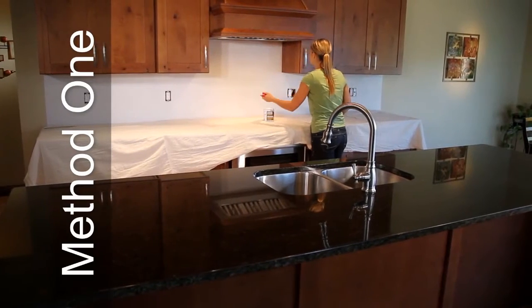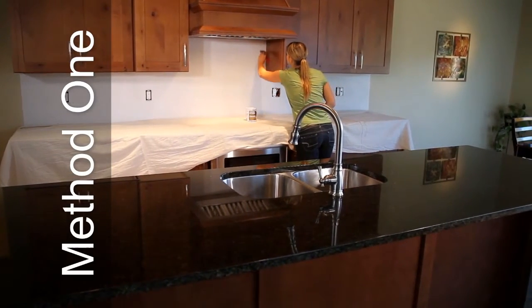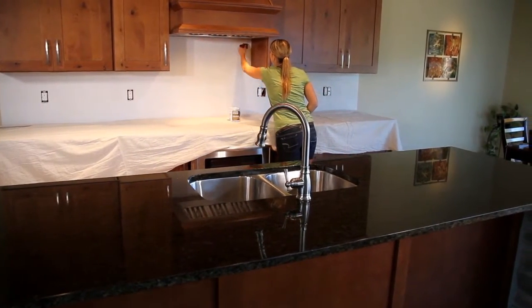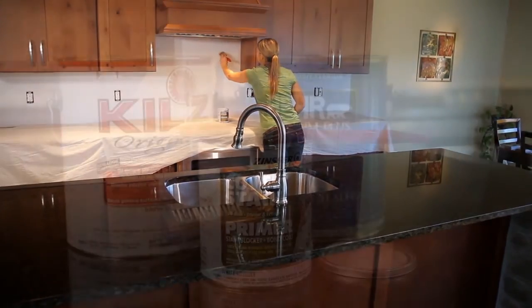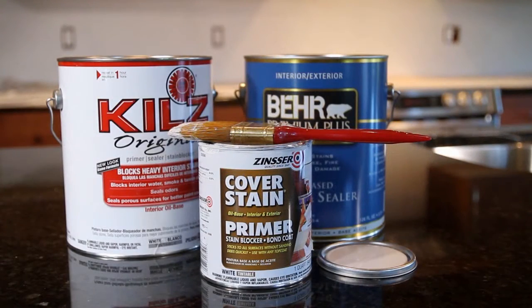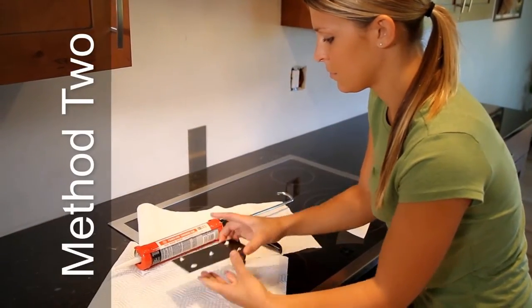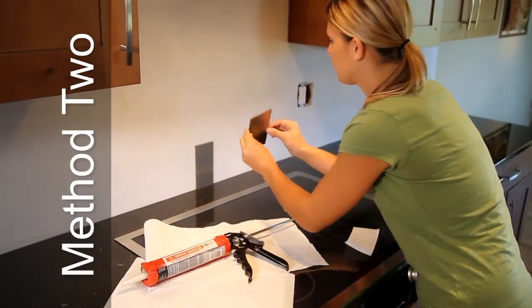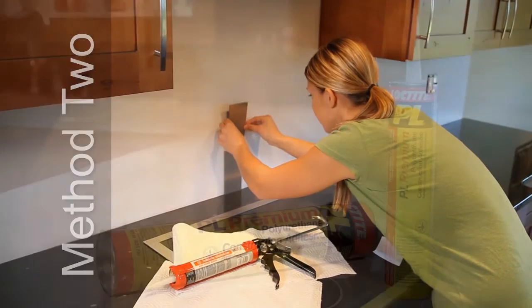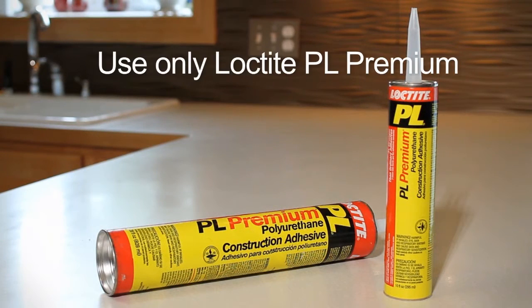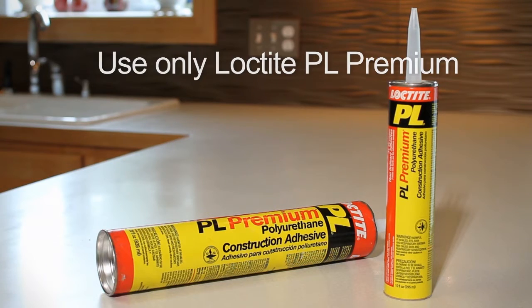If you're using installation method one, proper wall preparation is required. The wall to which you are applying Aspect tiles must be smooth and primed with a fresh coat of oil-based primer. If you do not intend to sand and prime the surface, method two, using an additional adhesive, should be used. We recommend a high-quality construction adhesive, like Loctite PL Premium, be applied to the back of each tile.